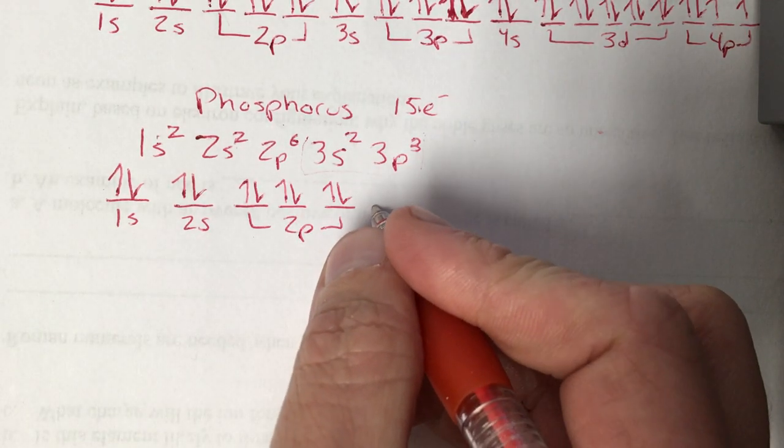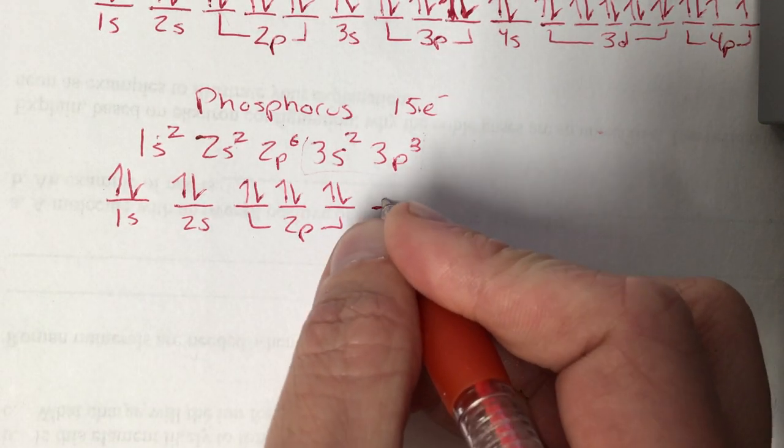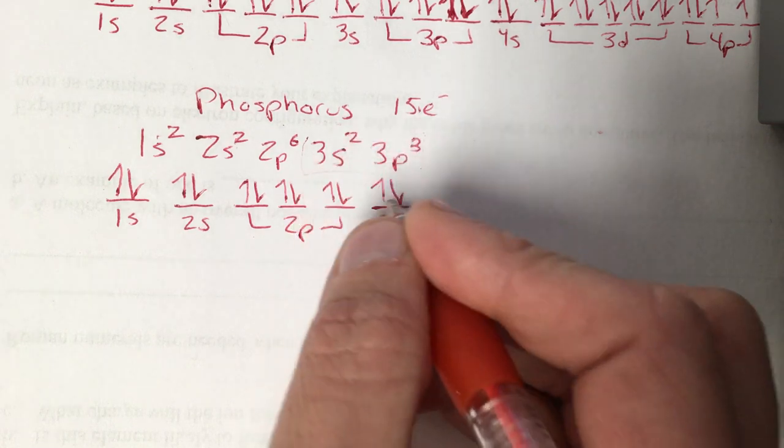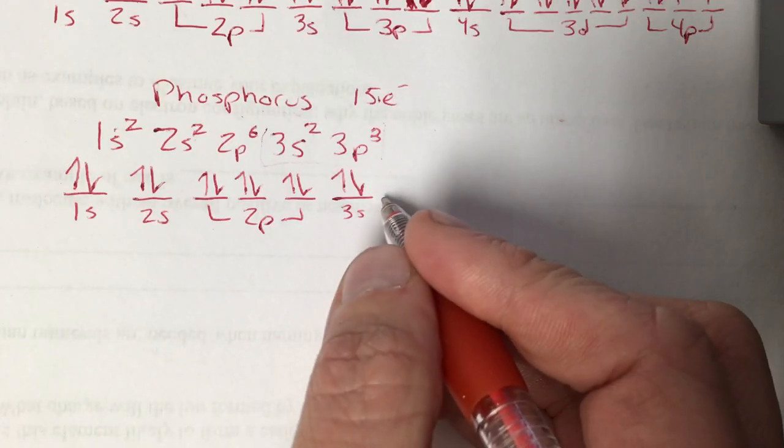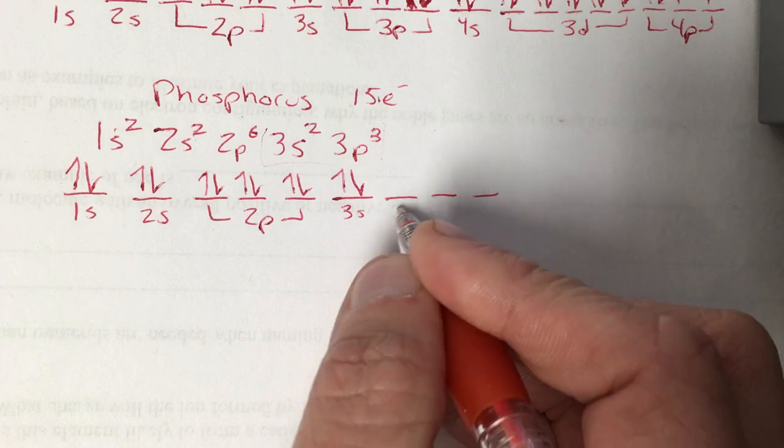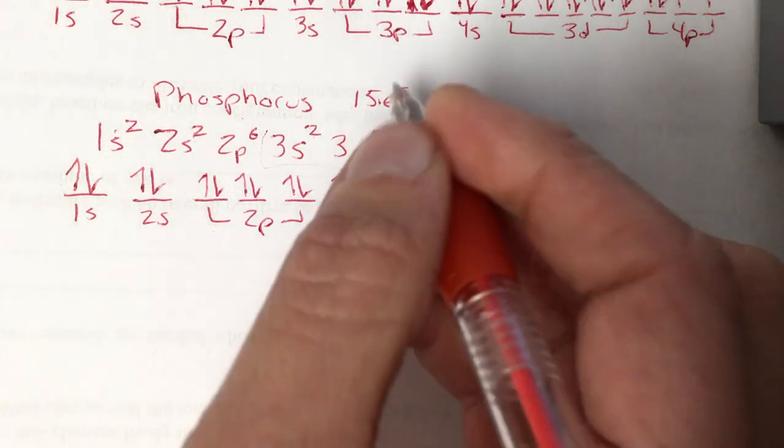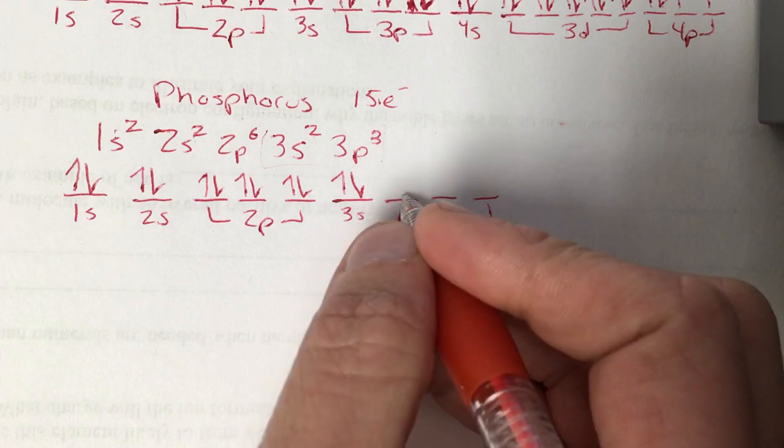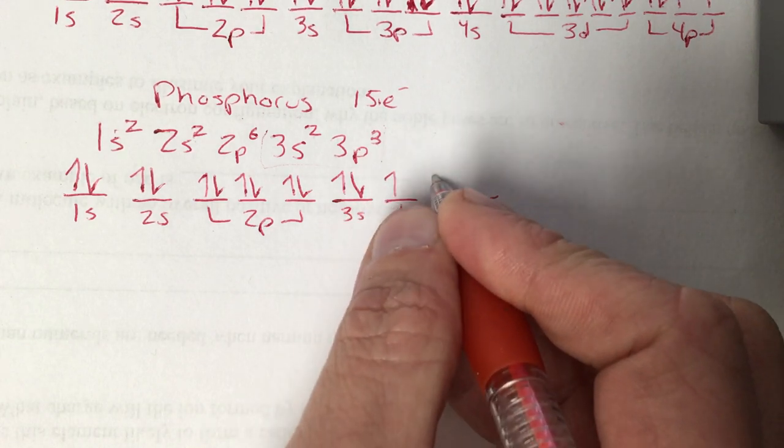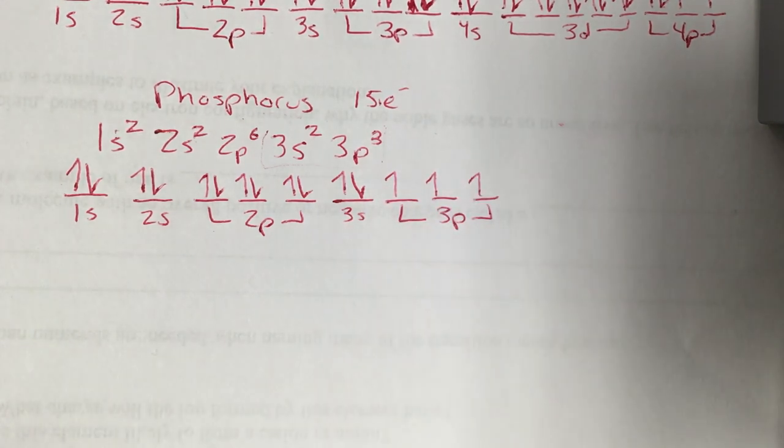Next up is an s. 2 electrons. 1 up, 1 down. And finally, the 3p. 3 electrons. Again, 1 at a time. And then you can double them up. That's it. All 3 are in there. All 3 are up. There's no downs to do this one. All singles. No repulsion. That's the way it needs to be. Minimum number of doubles.